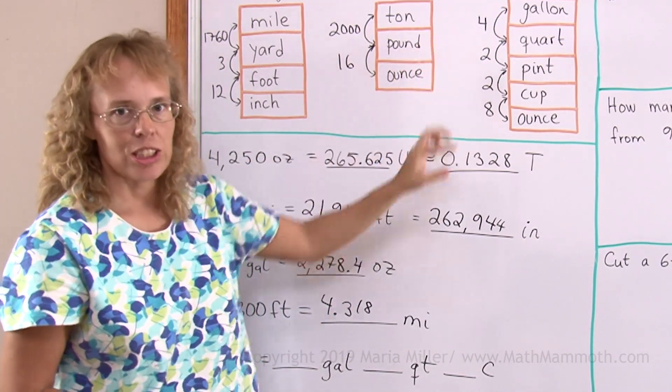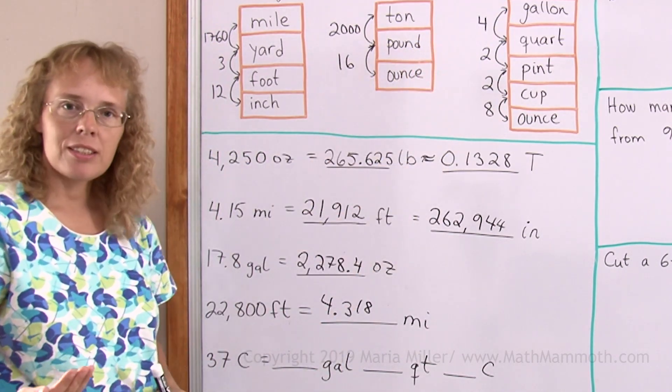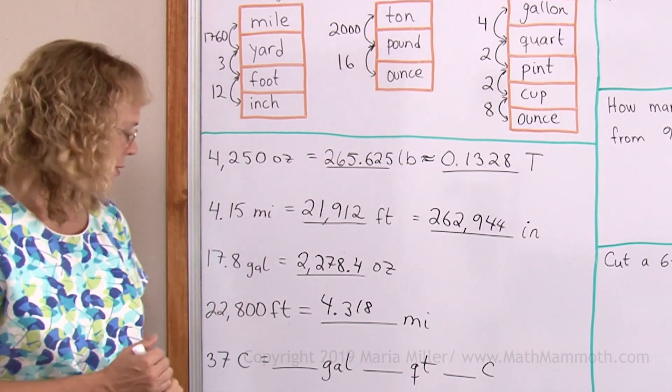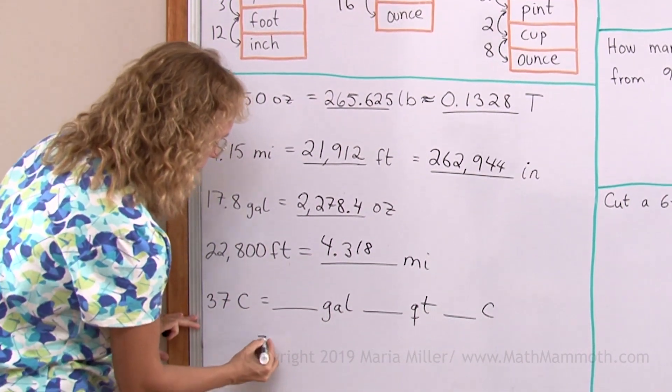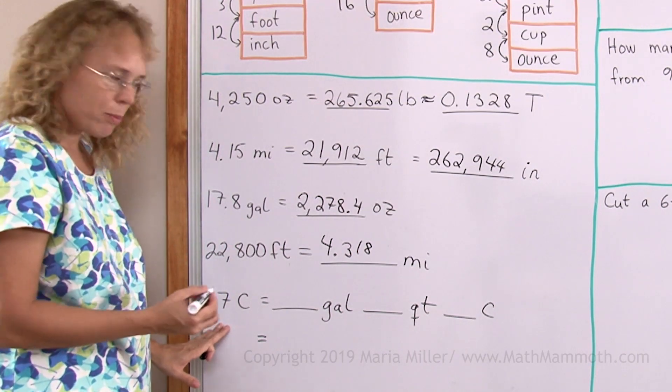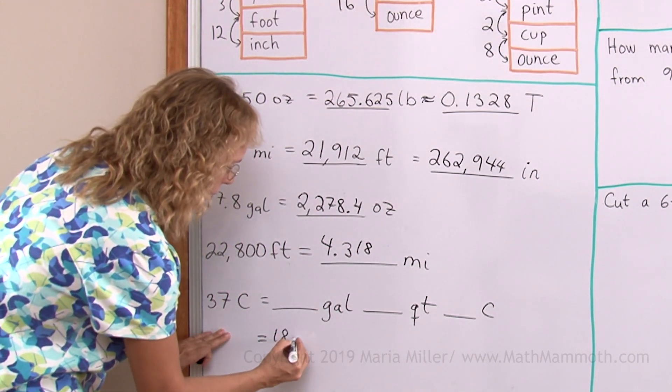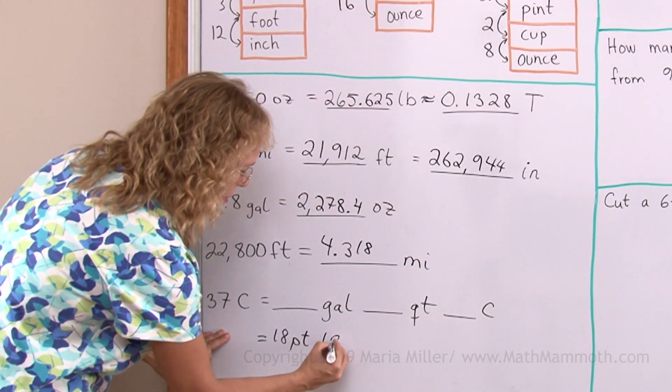The conversion factor is 2. Pints are bigger units. I need fewer of them so I will divide. 37 cups would be... 36 cups would be exactly 18 pints. And then there's one cup left over.